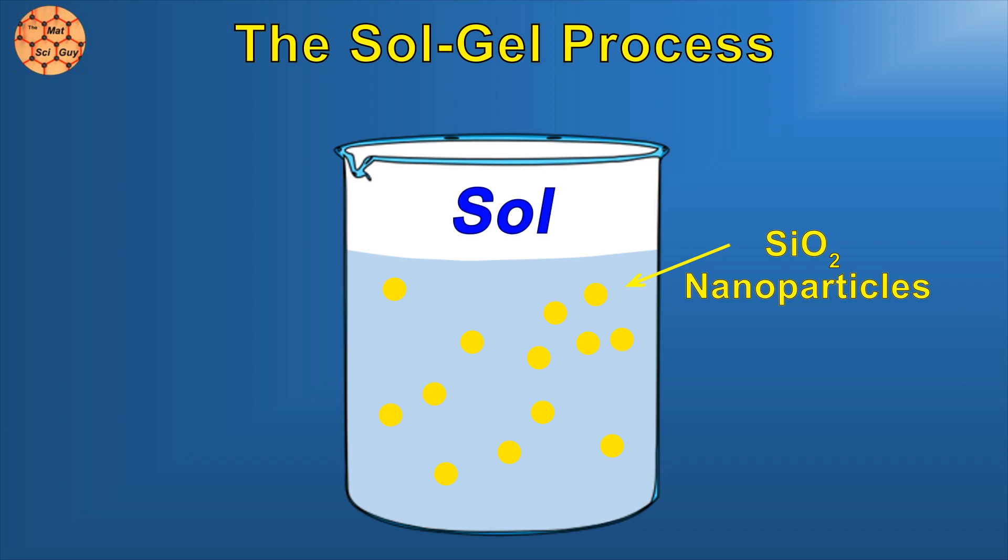These nanoparticles, if they reach a critical concentration, will start to stick to each other and condense, making a gel. Sol, gel, you get the picture.